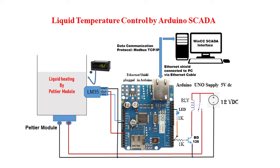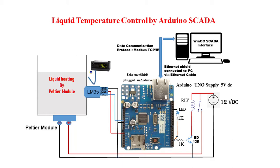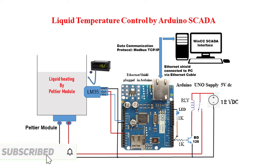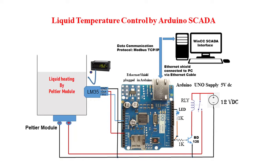When the temperature of the liquid falls below 40°C, the filter module will be turned on by the digital output of the Arduino. When the temperature rises above around 47°C, the filter module will be turned off. This procedure will continue until the stop command comes from the SCADA interface. The temperature sensor LM35 has been used to sense the temperature of the liquid, and an additional temperature indicator is also used to monitor liquid temperature locally.